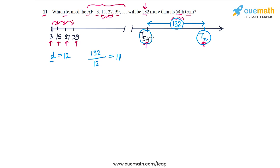This means that to find the position of this term, all we need to do is add 11 to 54, so that's 65. This means that T65, or the 65th term of the AP, is 132 more than the 54th term.